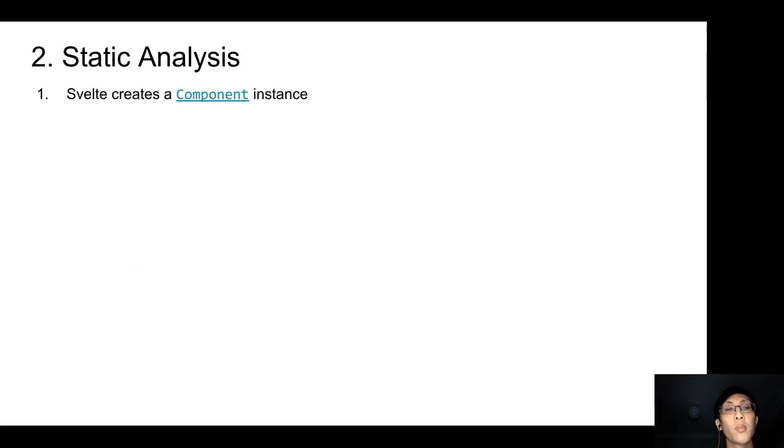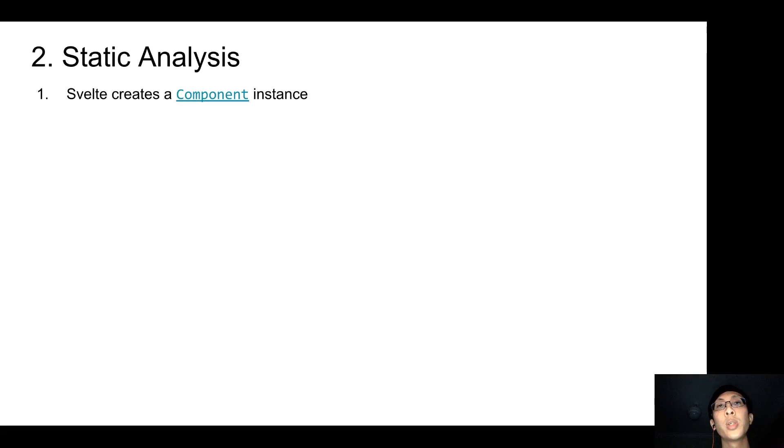Next, Svelte goes to analyze the AST that was created. Firstly, Svelte creates a component instance. A component class stores information of the Svelte component, such as all the variables being declared, all the reactive variables declared using reactive declarations, all the slots to be provided by the component, or the compile options, warnings and errors and so on.